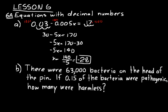We can set this up just like a fractional part of a number problem except we'll use the formula D for decimal times of equals is. And we could even set us up a diagram to help us think of the problem. And we could think of this as the whole and that would be 63,000. There were 63,000 bacteria on the head of the pin.